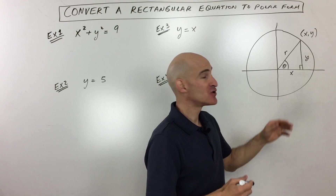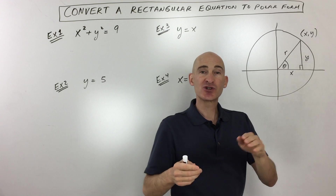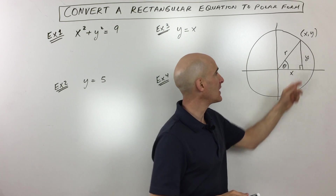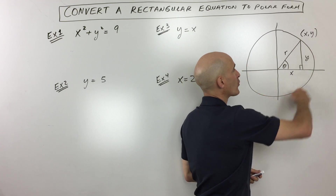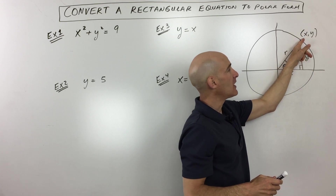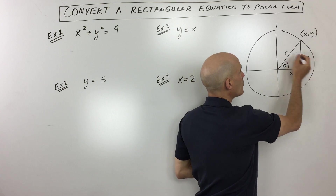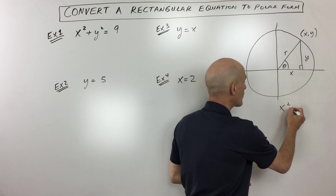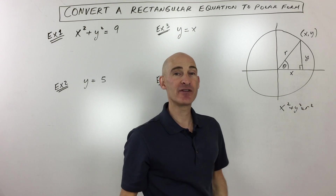What you want to understand is the connection between rectangular coordinates — the left, right, up, down, etch-a-sketch sort of way of locating a point — and the polar way of locating a point, which is circular. You've got the radius and the angle to get to a particular point. From this diagram, x, y, and r are connected by x squared plus y squared equals r squared, which is just the Pythagorean theorem.